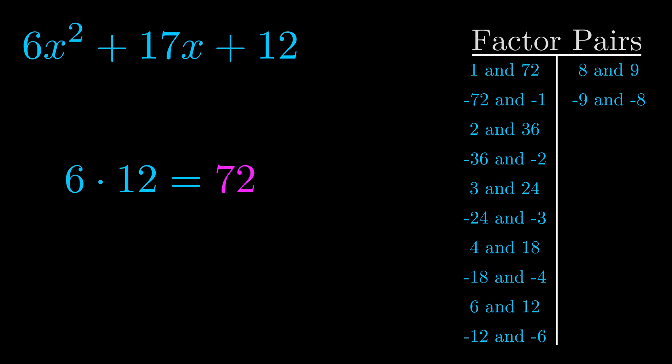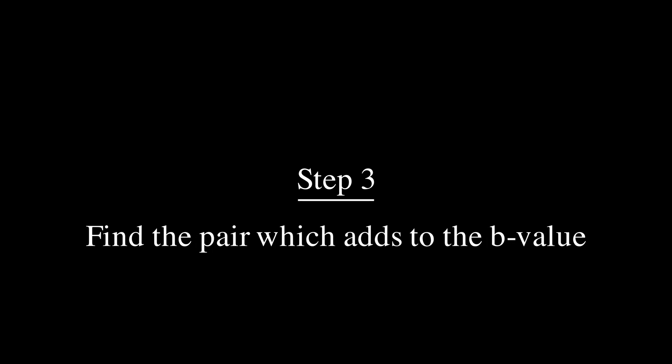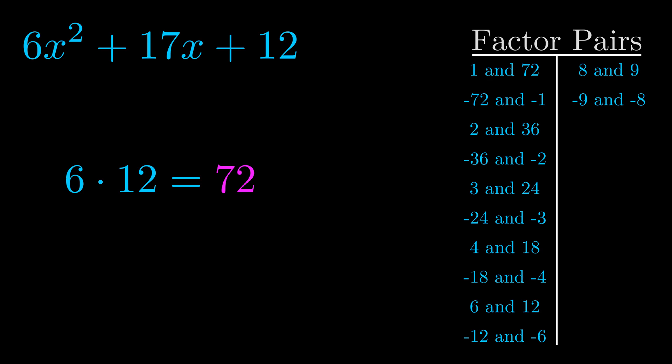Now once you have these factor pairs, the goal is to find which of these pairs adds to the b value. The b value is the coefficient on the x term. That's the middle term, the one that we haven't done anything with yet.